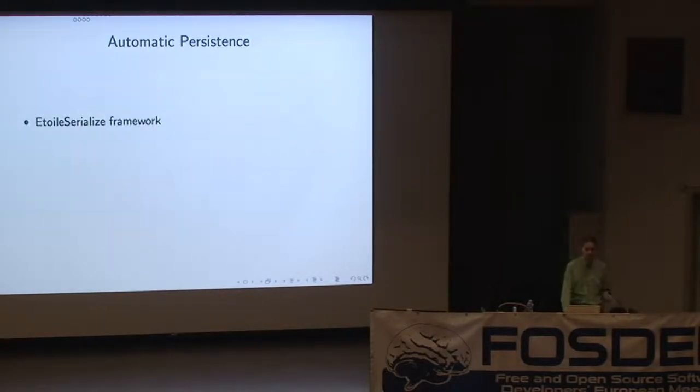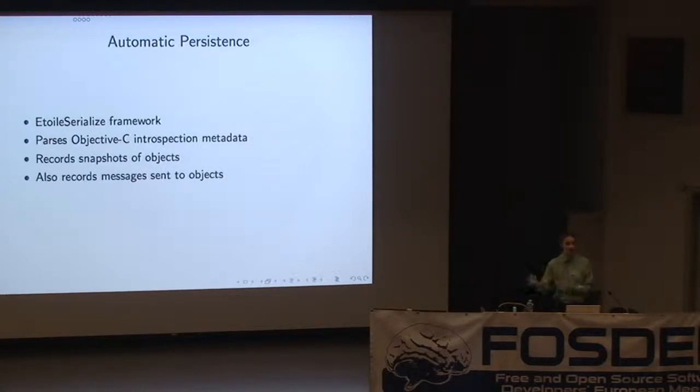We can also do some fun stuff like automatic persistence. We have this Etoile serialized framework. And one of the nice things about Objective-C is that it has introspection metadata everywhere. So every object, you can enumerate all of the methods that it has, what their types are. You can enumerate all of the instance variables, what their types are. You can see its superclass, all of that stuff. So we can look at an object, visit every object that it references. We can automatically serialize all of its instance variables. We can take snapshots of objects. Messages that you send to objects are actually objects themselves, so we can record those as well. We can record the entire undo history to disk with no modification to the model code in a statically compiled language that's almost as fast as C. So that's pretty nice.